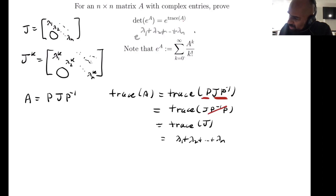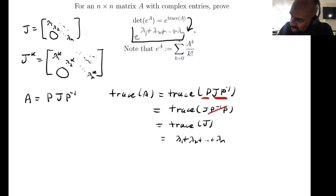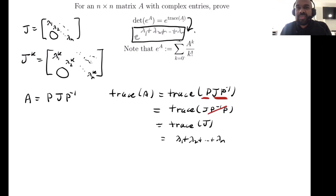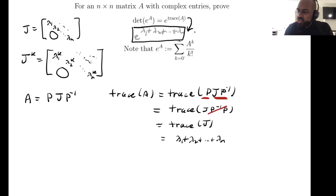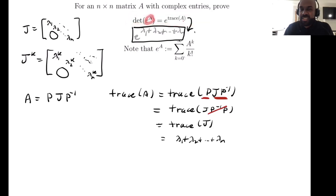So e^(trace A) is exactly the quantity we recognized as the determinant of e^A. This is a cool, fascinating use of the Jordan canonical form to establish this identity relating the determinant of the exponential of a matrix to the trace of the matrix itself.